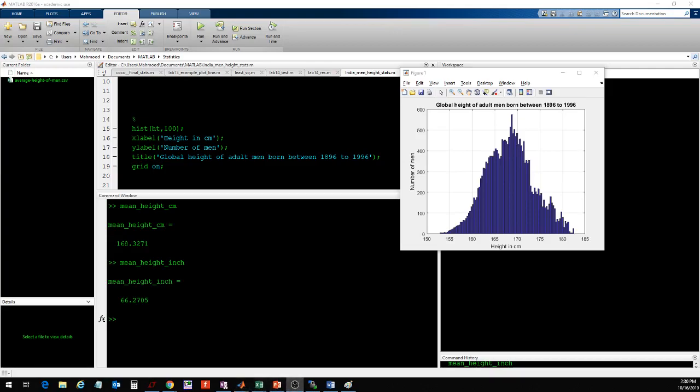The mean height in centimeters is 168.33 centimeters for adult men, and in inches that is 66.3 inches, which is about 5 feet 6 inches. This gives me a global idea. This one number indicates what my data is centered around, the central tendency of my data set.